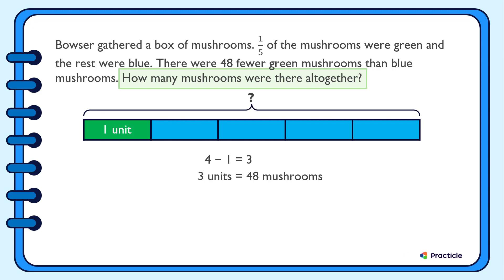Since we know that 3 units represent 48 mushrooms, we can divide 48 by 3 to find the value of 1 unit. 48 divided by 3 equals 16.